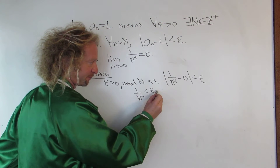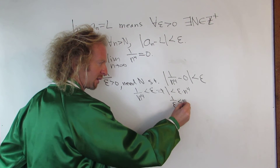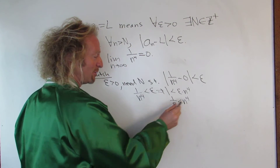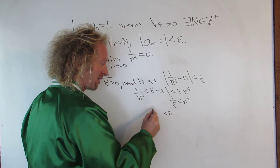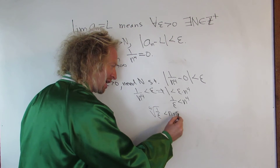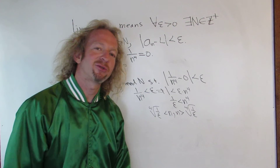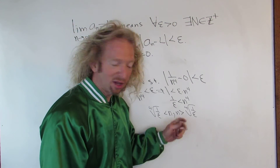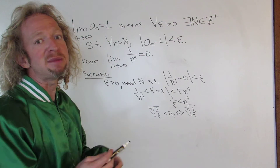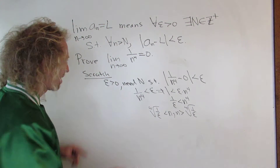To solve for n, multiply by n to the fourth: you get one less than epsilon times n to the fourth. Divide by epsilon, then take the fourth root of both sides. When you do that, you get n greater than the fourth root of one over epsilon. So we need a natural number that's bigger than that. There's something called the Archimedean property that allows us to choose a natural number bigger than any given real number. We'll use that to choose our N in the proof.